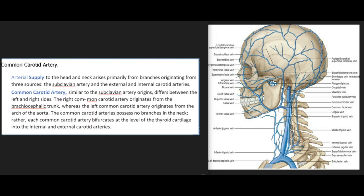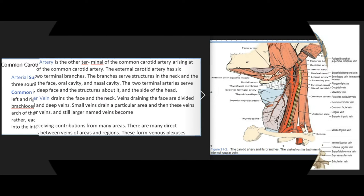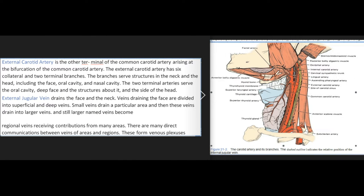The common carotid arteries possess no branches in the neck. Rather, each common carotid artery bifurcates at the level of the thyroid cartilage into the internal and external carotid arteries. The external carotid artery is one terminal branch of the common carotid artery, and it has six collateral and two terminal branches. These branches serve structures in the neck and head including the face, oral cavity, and nasal cavity.